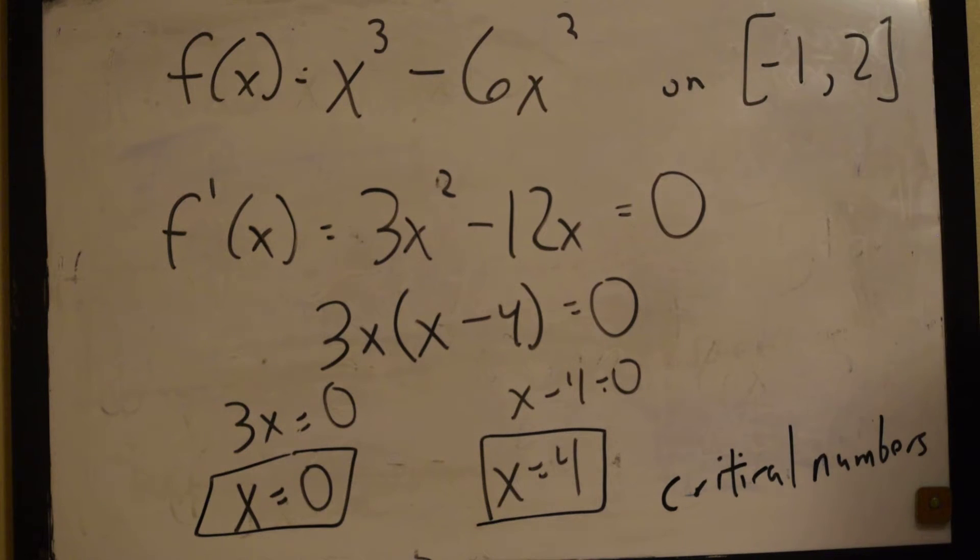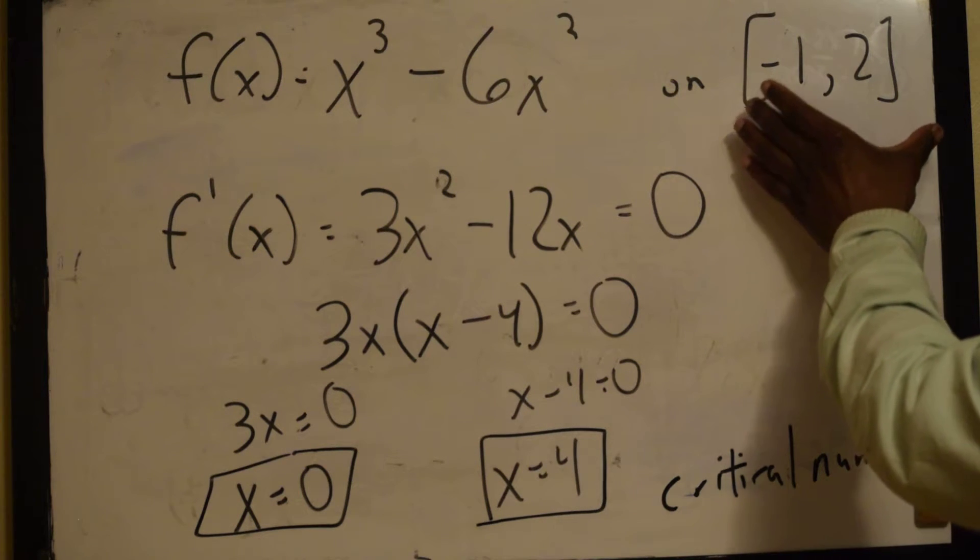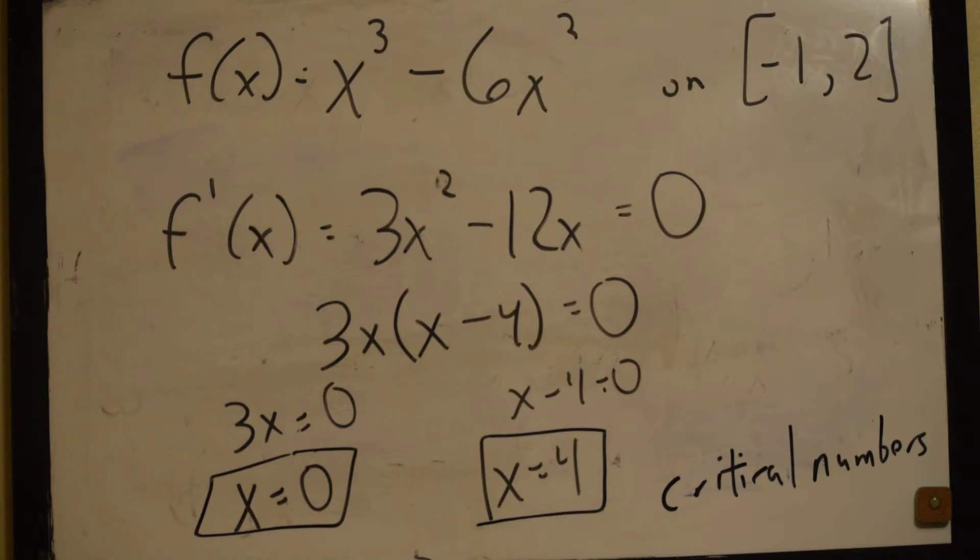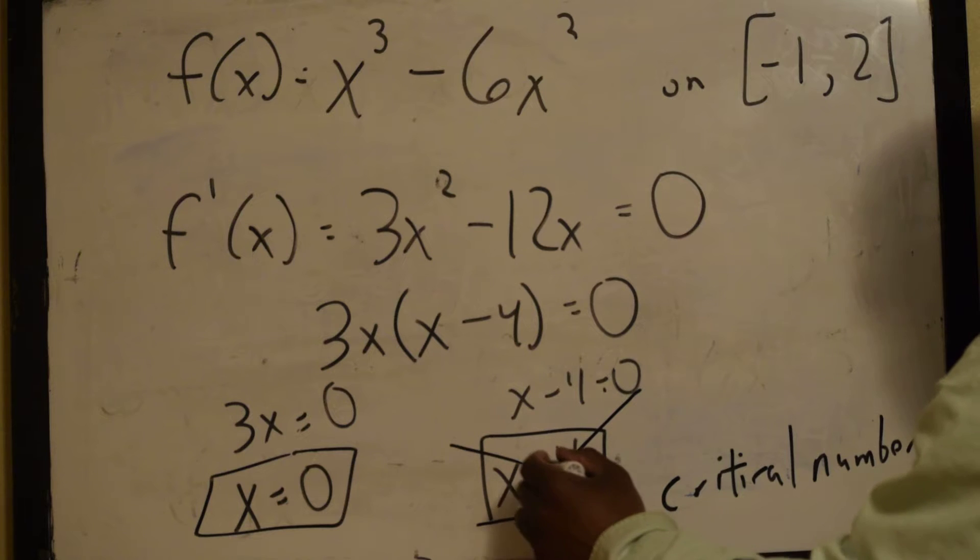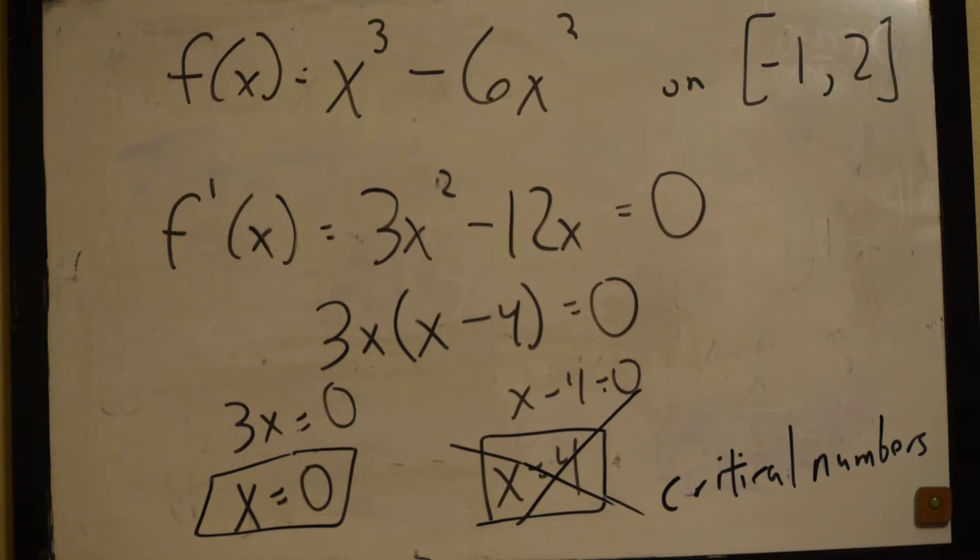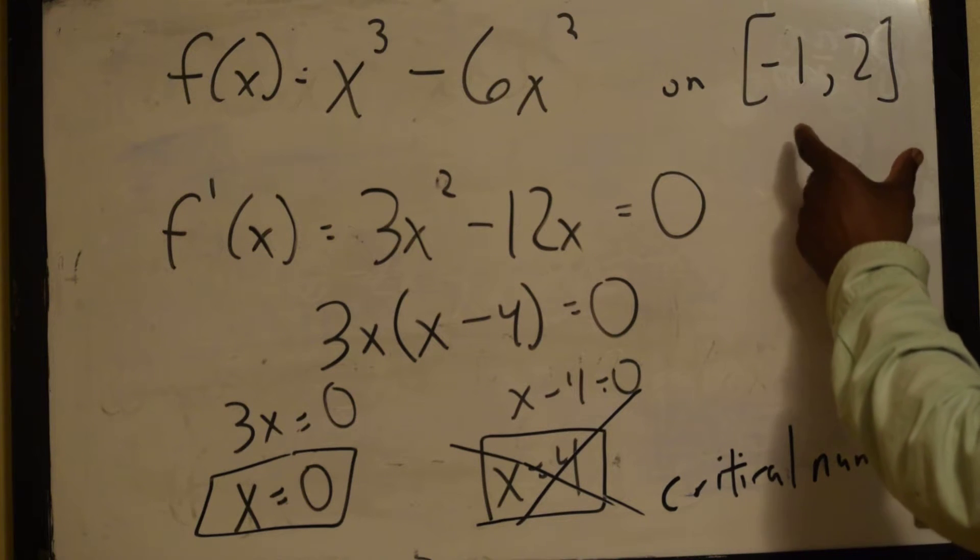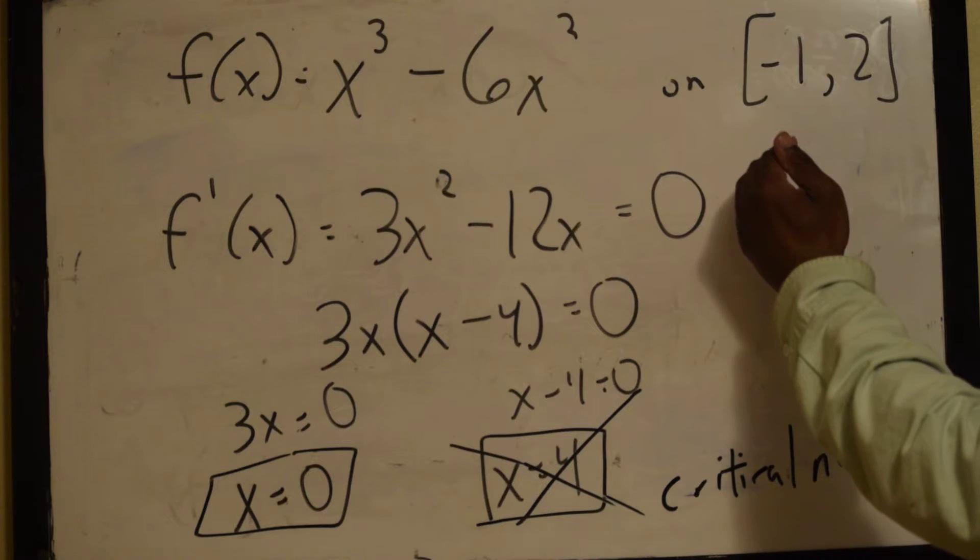You remember we talked about the importance of them, but now, this is what we look at. We're only concerned about what's happening on the interval from negative 1 to 2. So, in this case, we could cross out x is equal to 4. Why? Because 4 is outside of the interval. We're only concerned about what's going on between negative 1 and 2.